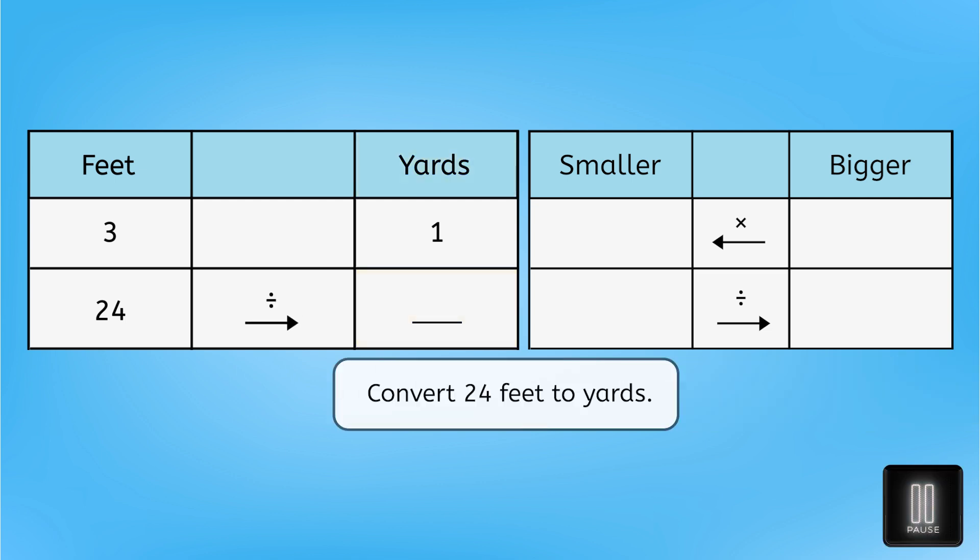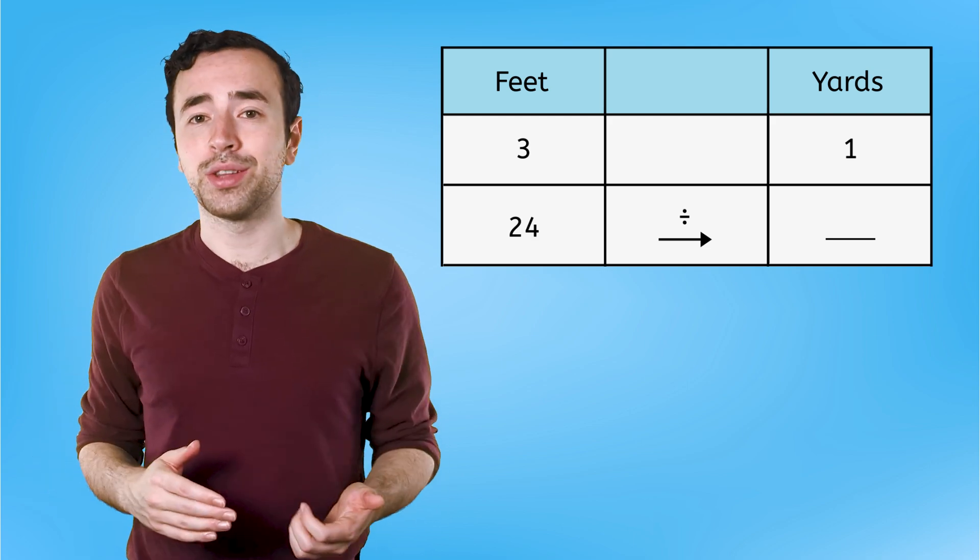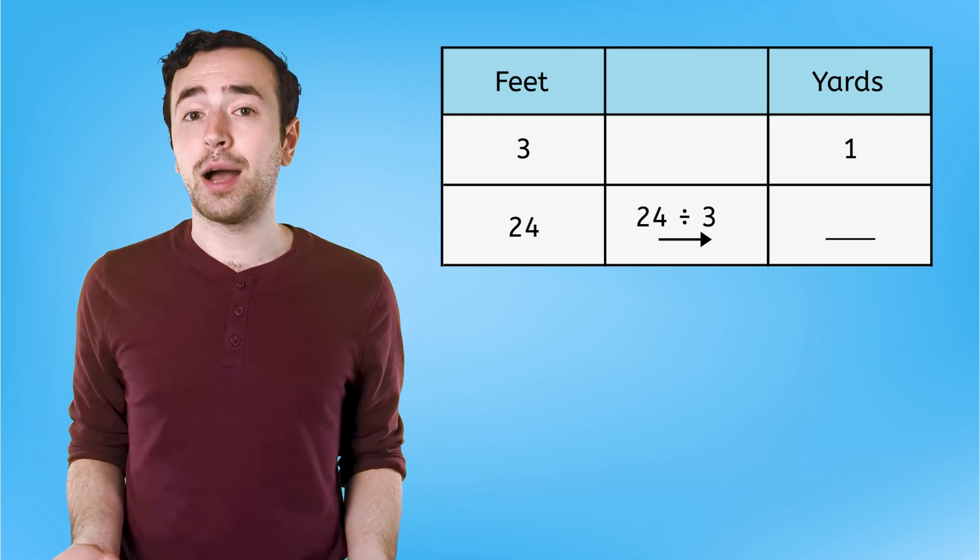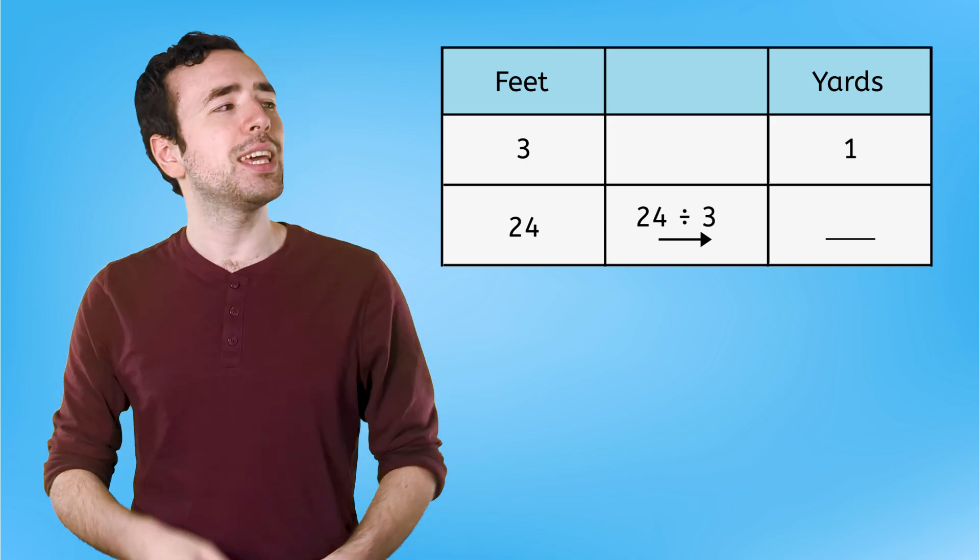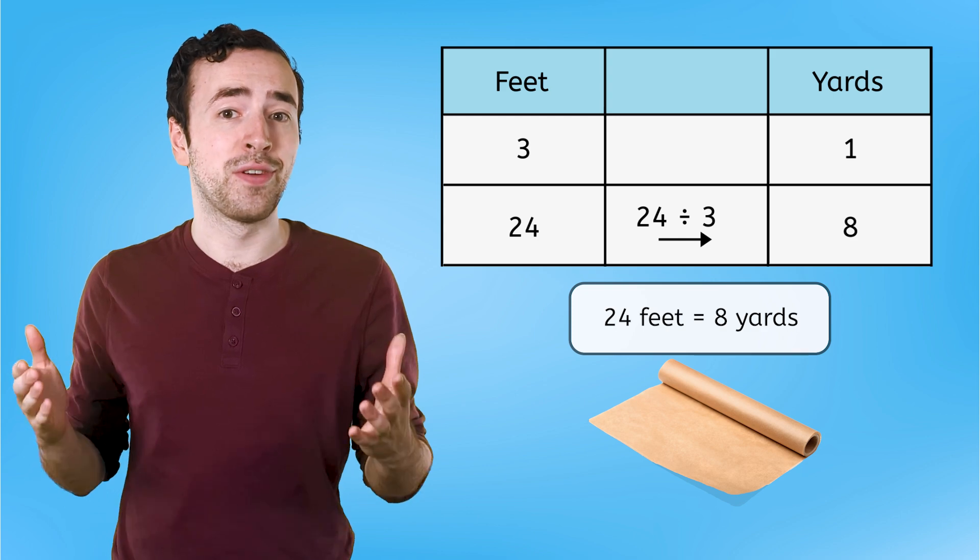Pause now to convert 24 feet into yards. Since there are 3 feet in 1 yard, we can divide 24 feet by 3 to figure out how many yards that is. 24 divided by 3 equals 8, which means we need 8 yards of paper.